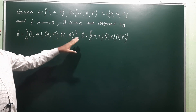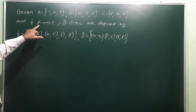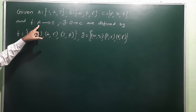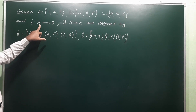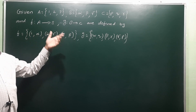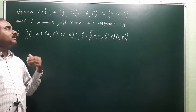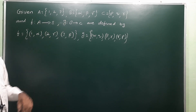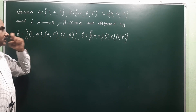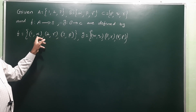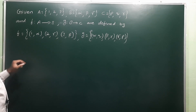First, we have to prove that f is bijective. The domain is A and codomain is B. For f to be one-one, distinct elements in A must have different images in B. So different elements in A must have different images in B. The image of 1 is alpha, image of 2 is gamma, image of 3 is beta.